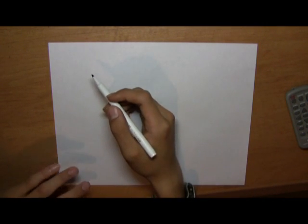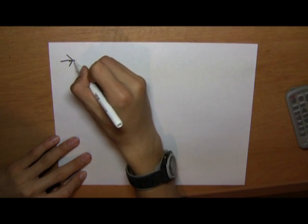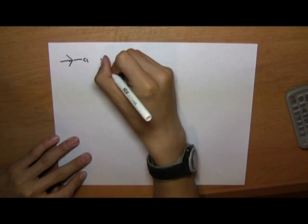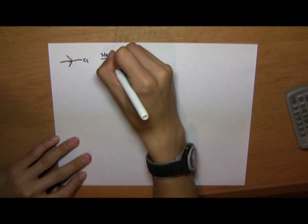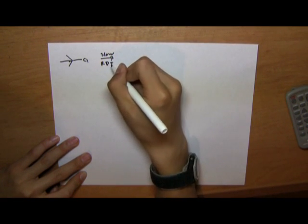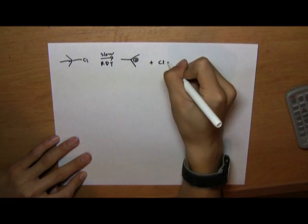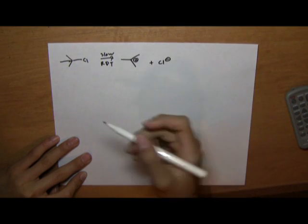So let's draw the first step of the E1, and that's this. This is the slow step, or rate-limiting, rate-determining step. And we have this tertiary carbocation plus a halide anion, which is chloride in this case.